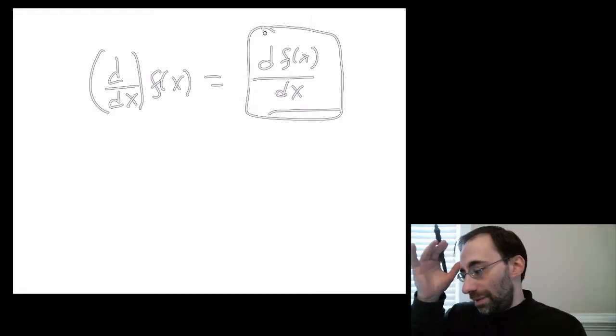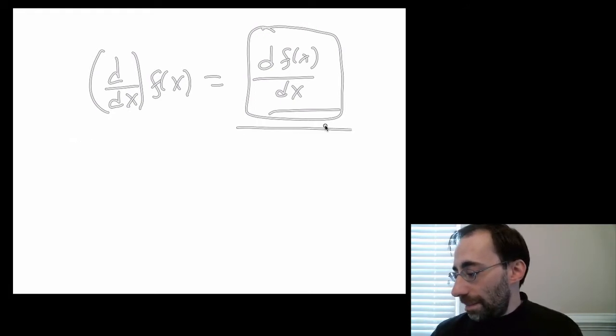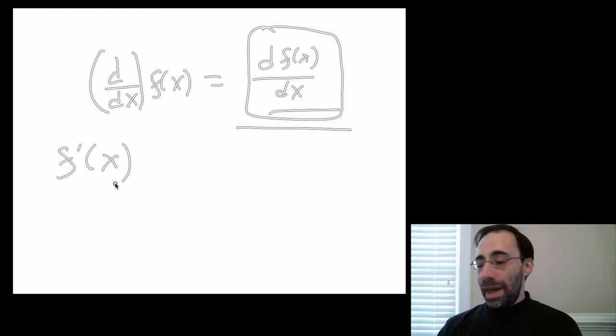That's one common notation. There are other notations as well. Lagrange had some notation. When there can't be any confusion about a derivative, instead of writing this whole thing out, you can write f prime. Here, the prime represents a derivative.